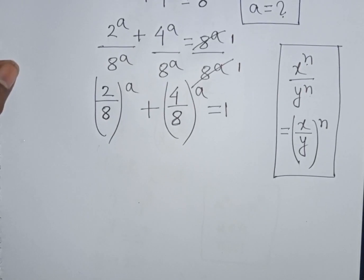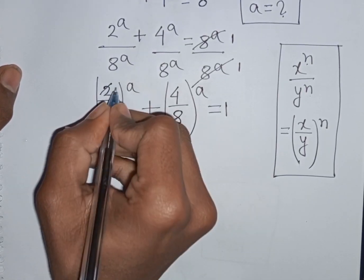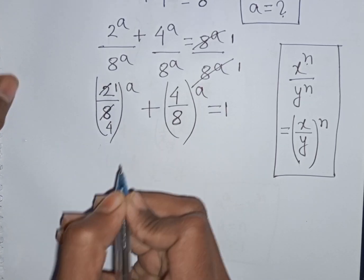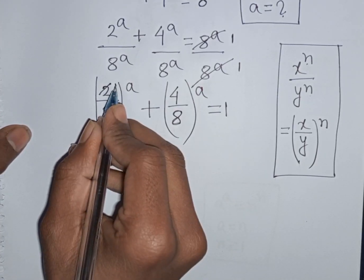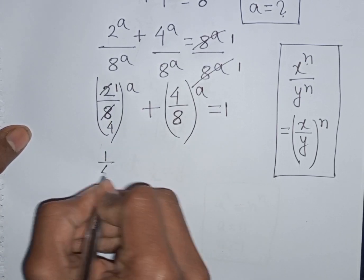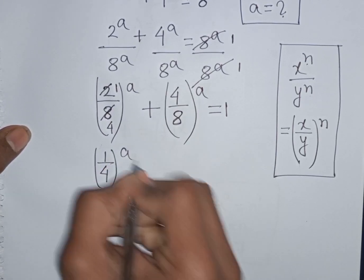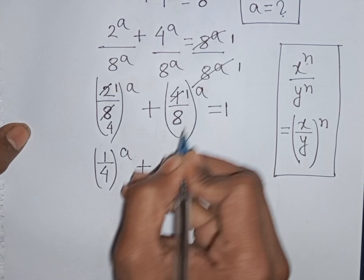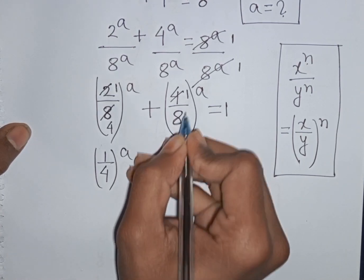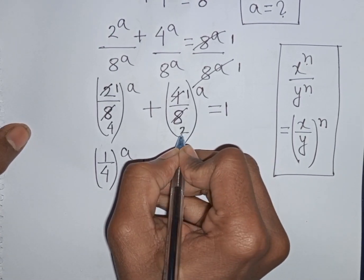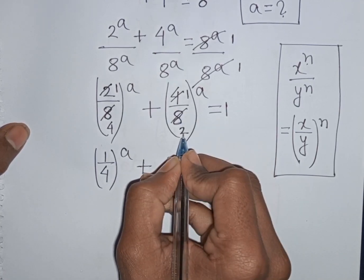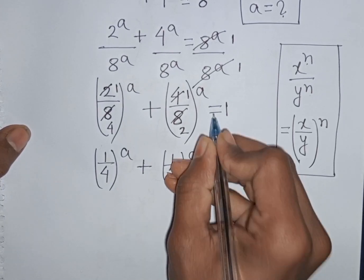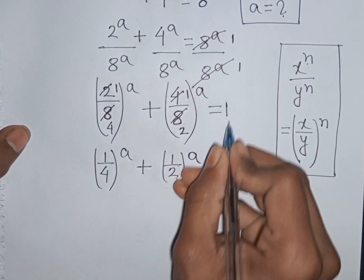Now 2 divided by 8 — 2 divided by 2 that means 1, and 8 divided by 2 that means 4. So here (1/4) bracket power A, then plus 4 divided by 8 — 4 divided by 4 that means 1, and 8 divided by 4 that means 2. So we have (1/4) bracket power A plus (1/2) bracket power A is equal to 1.